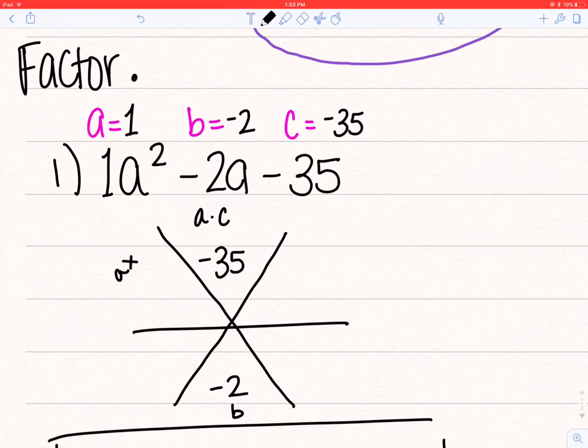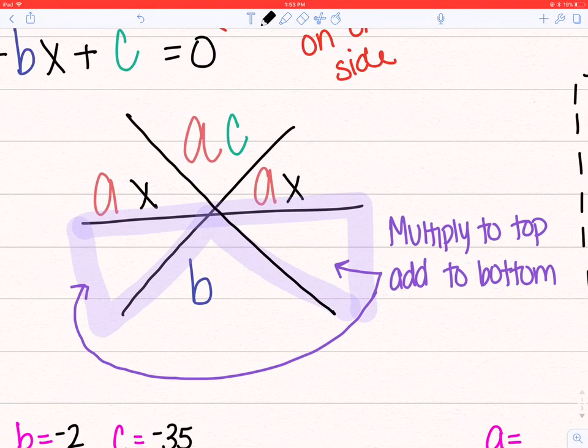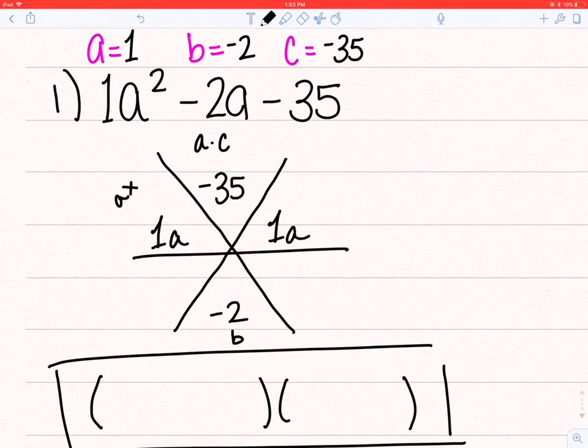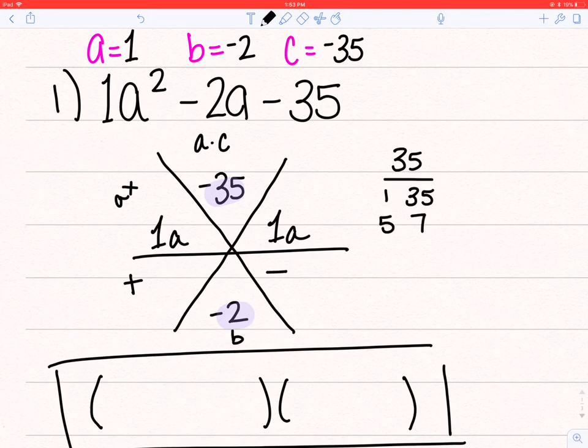a, x. Well, in this case, the variable is a, so it's actually going to be 1a, 1a, because up here, x just is symbolic of whatever variable I'm using. Now, I need to find two factors that will multiply to 35 and give me a difference of 2. Because 35 is negative, I know that I'm going to be 1 positive, 1 negative. So my factors of 35, I have 1, 35, 5, and 7. So 5 and 7 give me a difference of 2.